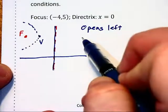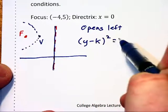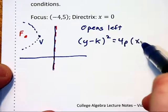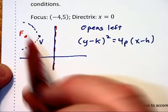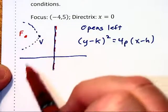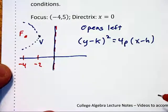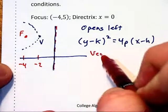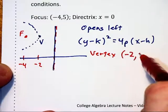That tells us we're going to be using y minus k quantity squared equals 4p times x minus h. We know by just finding halfway between negative four and zero that the vertex will have an x-coordinate of negative two. Therefore, the vertex will be located at negative two comma five.